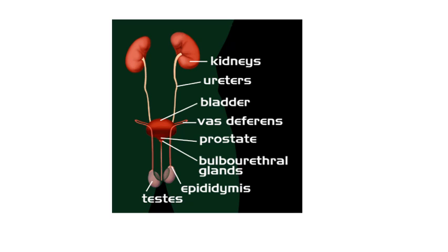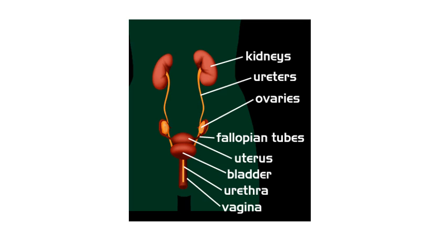Looking at the renal urogenital system for the male, including reproductive organs: the kidneys empty urine into the ureters, which then carry it to the bladder. The bladder holds the urine, and then the urethra takes the urine out for elimination. You can also see the prostate gland, testes, and epididymis as part of the male reproductive system. For the female, the same pathway applies — kidneys through the ureters — and you can see the fallopian tubes and uterus as the reproductive organs.